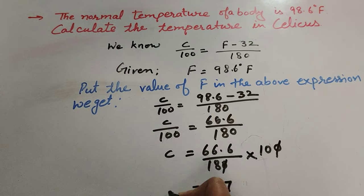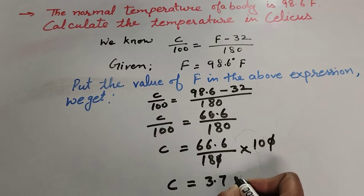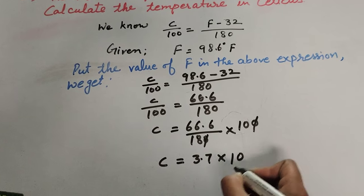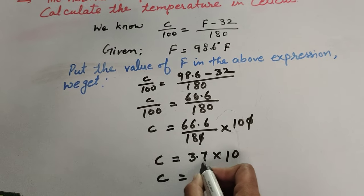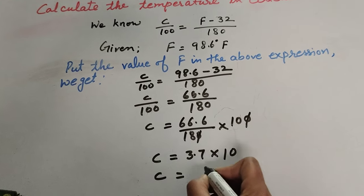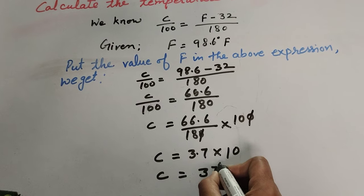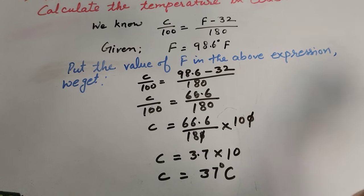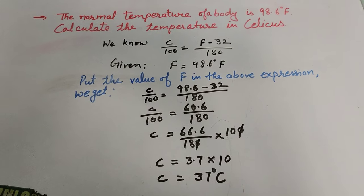We get the answer 3.7, so C is equal to 3.7 multiplied by 10. C is equal to 3.7 multiplied by 10, we get the answer 37. So C is equal to 37 degrees Celsius.